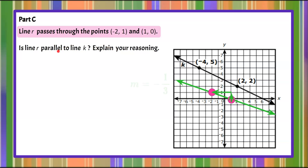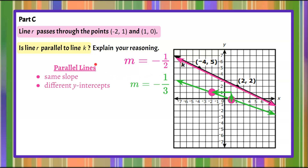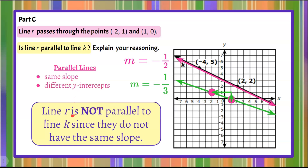When we want to talk about being parallel, we find our slopes because the slopes of two lines are equal if they are parallel. We rise 1 and run negative 3 to find the slope of line r. We already know that line k has a slope of negative 1/2. Since parallel lines must have the same slope, line r is not parallel to line k since they do not have the same slope.